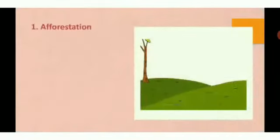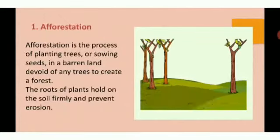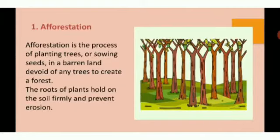The first method is afforestation. It is the most effective method to prevent soil erosion. Afforestation is defined as planting more and more trees on a barren land. When you plant more trees, the deep and long roots of the trees hold the soil tightly and do not allow it to be eroded by wind or water.